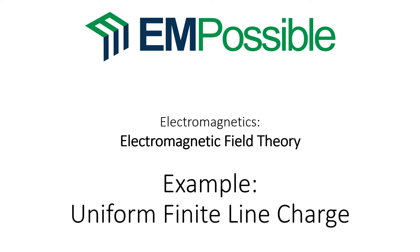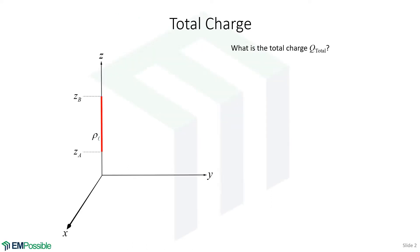Uniform Finite Line Charge. On the left, we see a line charge — a finite line charge. It has uniform charge density ρ_L. This line charge goes from a point Z_A up to a point Z_B.